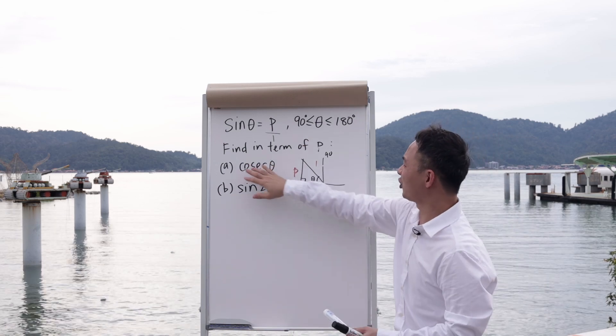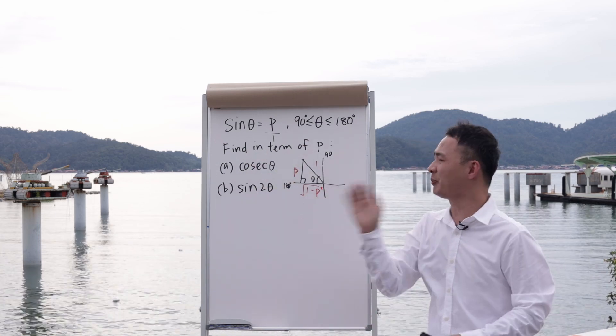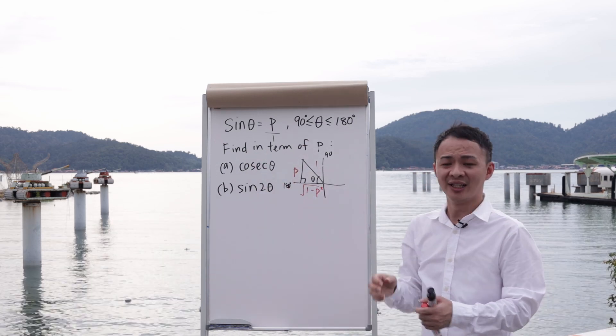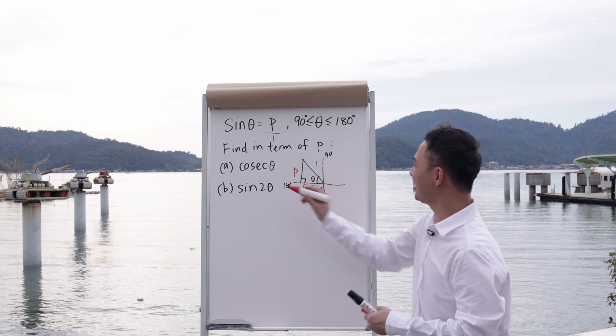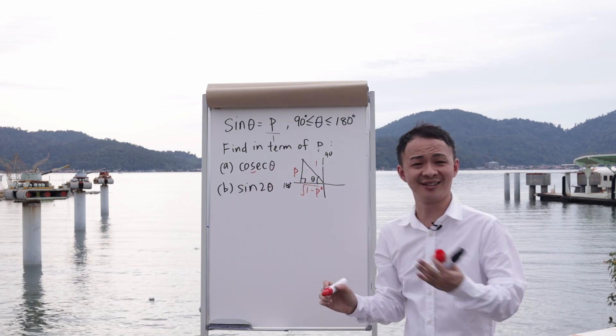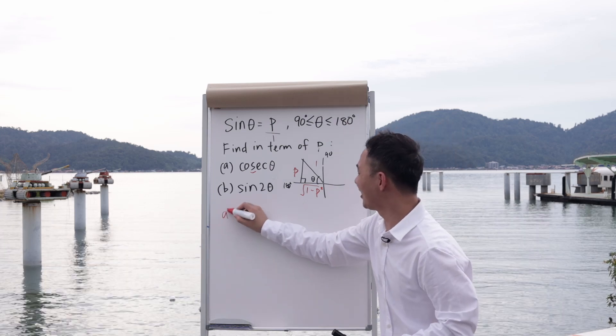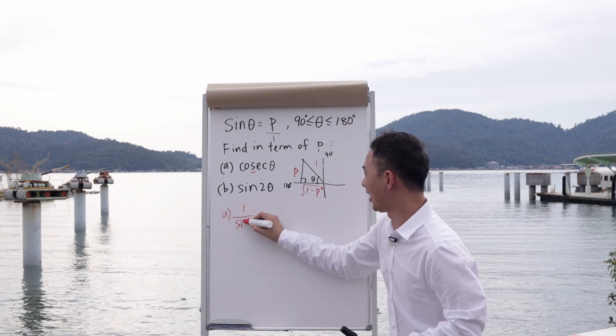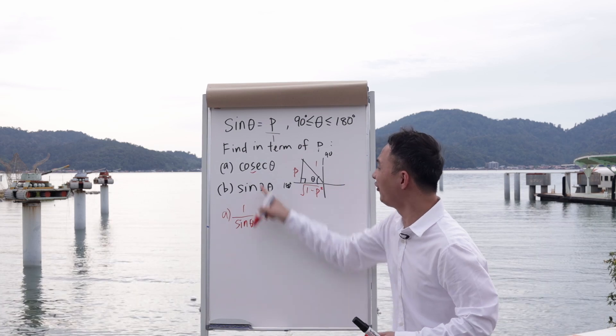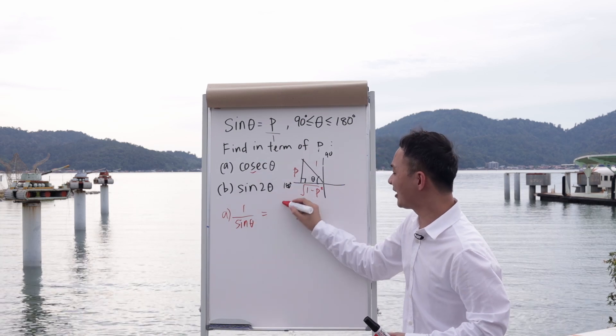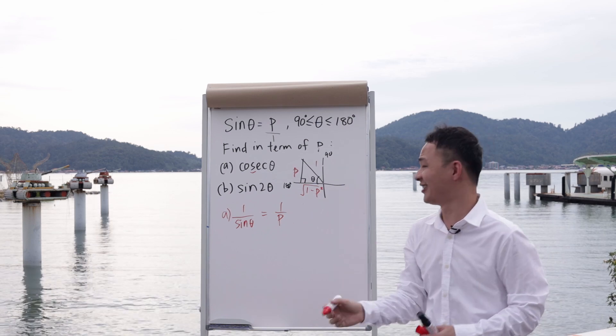First, I want to solve part A. They ask me to find, in terms of p, what is cosec theta. If you don't know what cosec theta is, look at the third letter—it's s. It means 1 over sin theta. So part A is just 1 over sin theta. This is the meaning of cosec theta. What is sin theta? It's p. So the answer is just 1 over p. It's very easy.